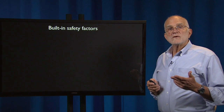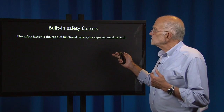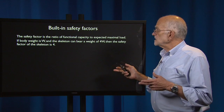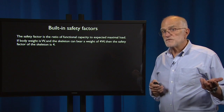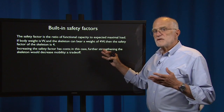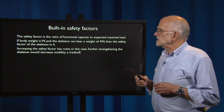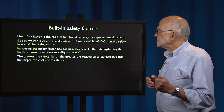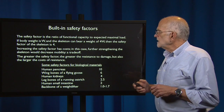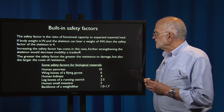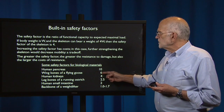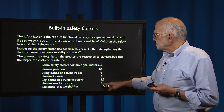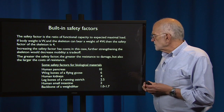Built-in safety factors are part of those protections. The safety factor is the ratio of functional capacity to expected maximal load. For example, if body weight is W and the skeleton can bear a weight of 4W, then the safety factor of the skeleton is 4. Increasing the safety factor has a cost — further strengthening the skeleton would decrease mobility; that's a trade-off. The greater the safety factor, the greater the resistance to damage, but also the larger the costs of resistance. Here are a few safety factors for biological materials: human pancreas about 10, wing bones of a flying goose about 6, human kidneys about 4, leg bones of a running ostrich about 2.5, human small intestine about 2, and the backbone of a weight lifter between 1 and 2.